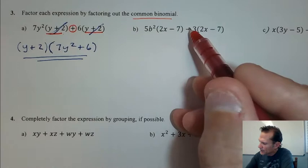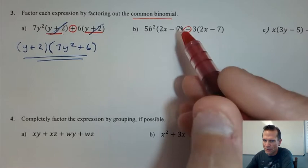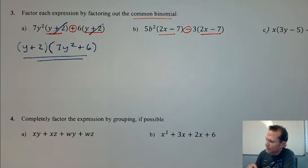Okay, so let's take a look at this one here. We see the common binomial again. I'm focusing in kind of on this subtraction sign separating this into two pieces here, two terms. I have this 2x minus 7 and 2x minus 7.